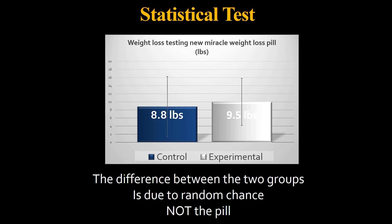Statistical tests showed the difference between the two groups is due to random chance, not the pill. In this case, you'd use your data to form an opinion and say, I'm not going to waste my money on that pill — the exercise worked just fine.